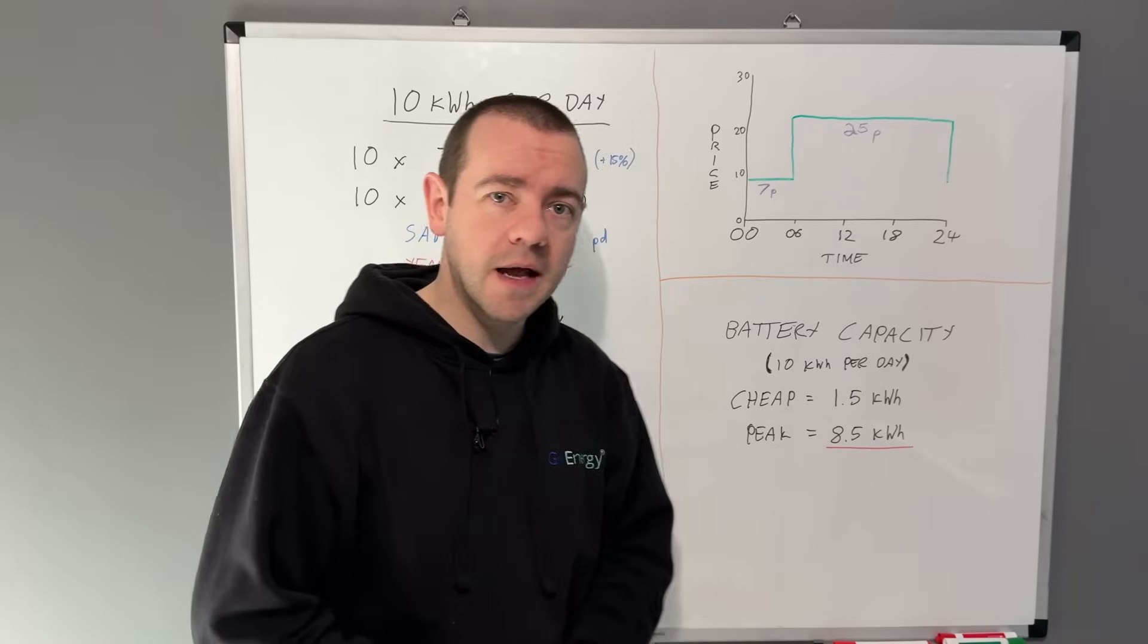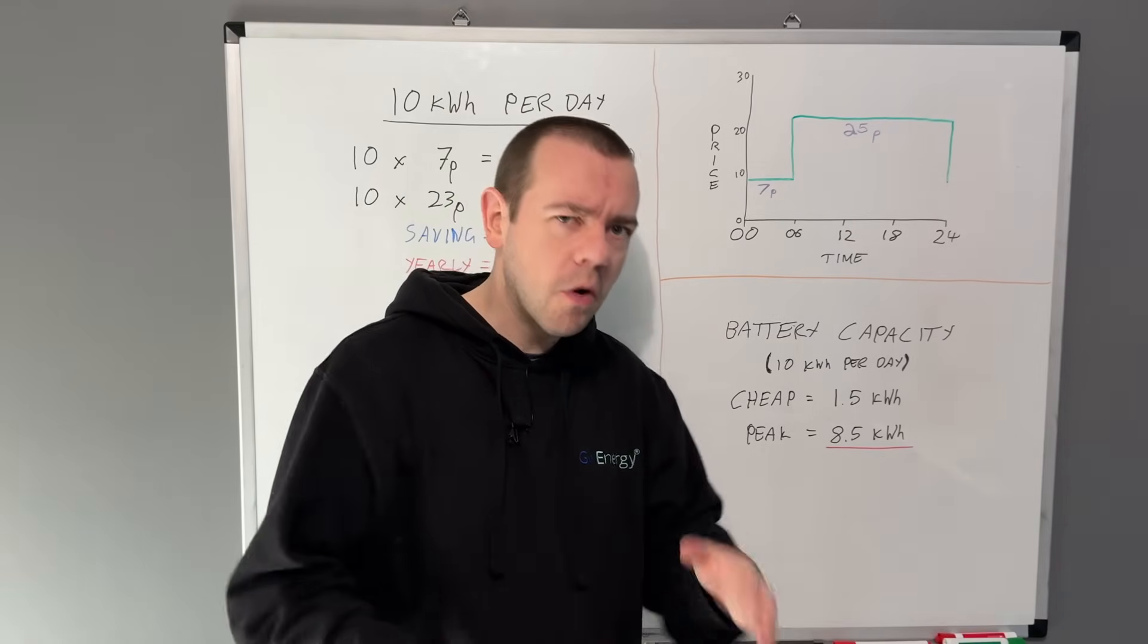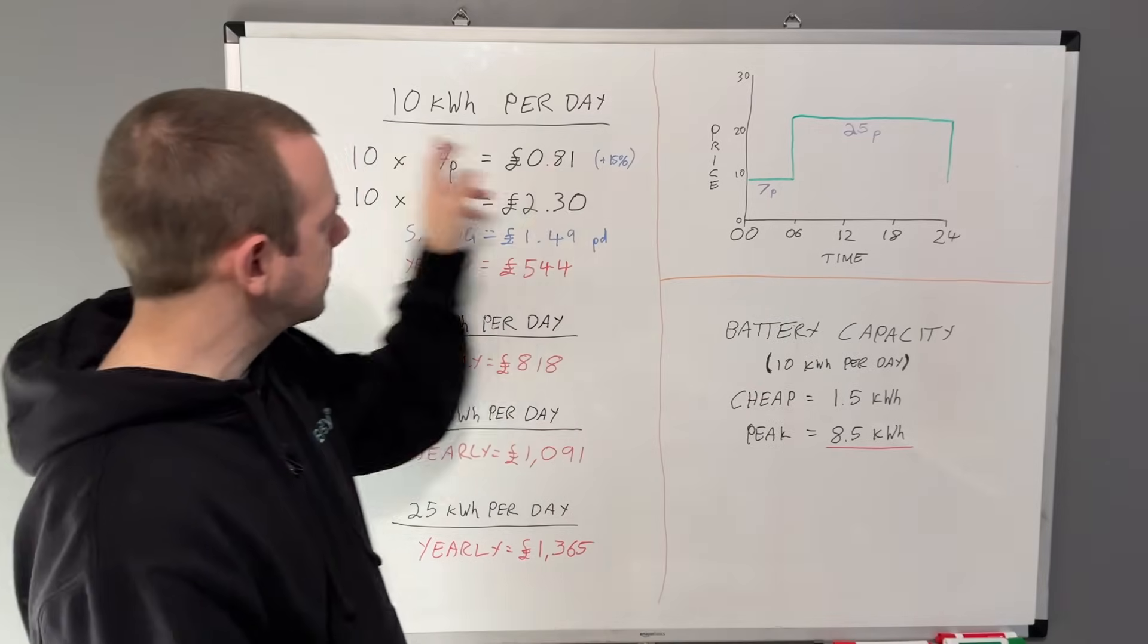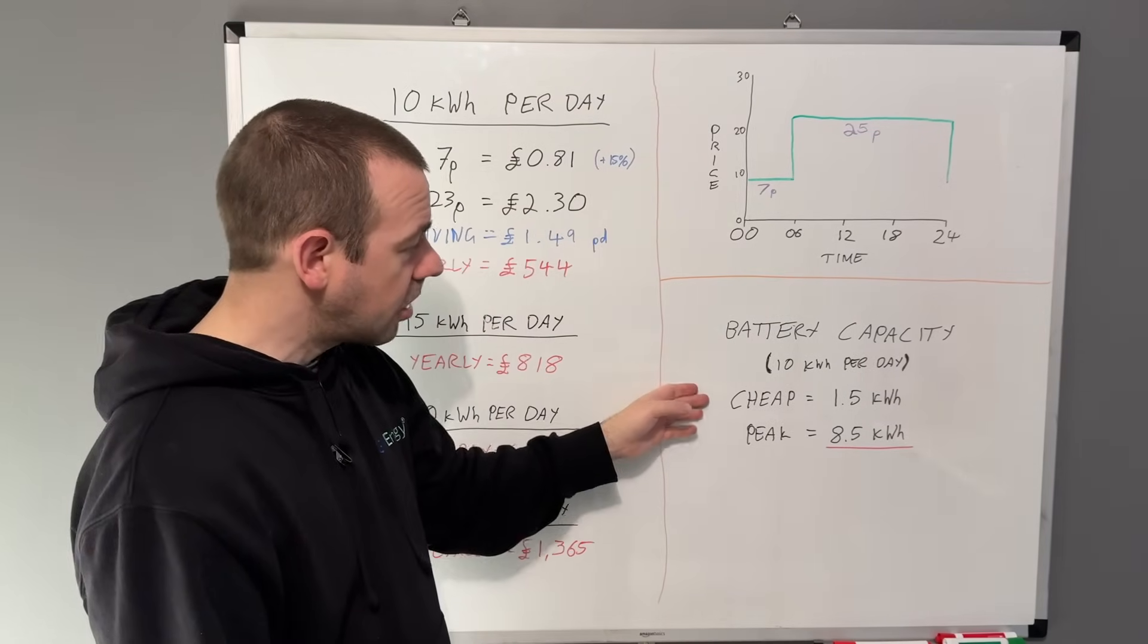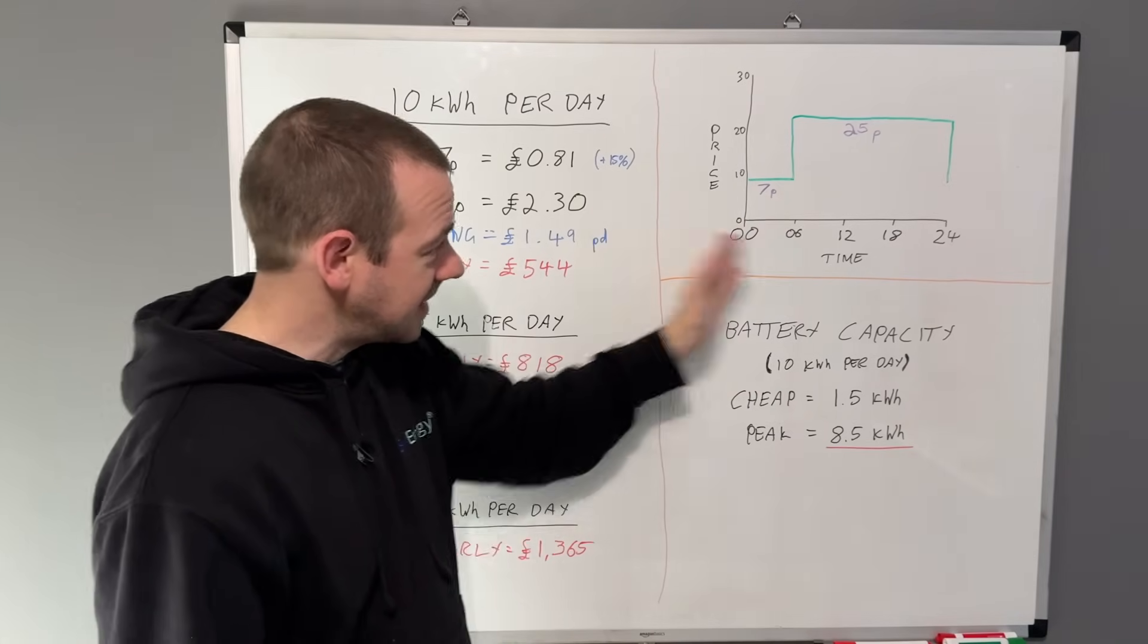In terms of the battery capacity, if we use the original example of 10 kilowatt hours per day, you're going to have some natural usage during the cheap window. Even if you ignore the battery, that's six hours where your house is still operating, even though it's at night.